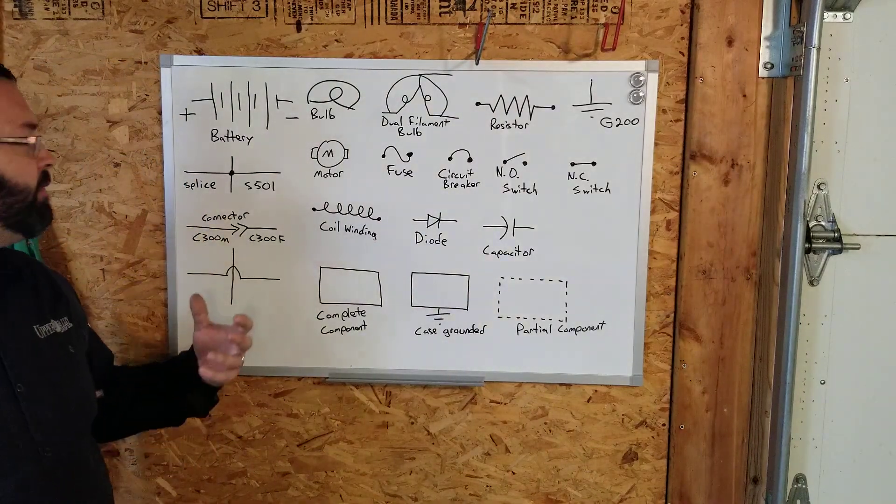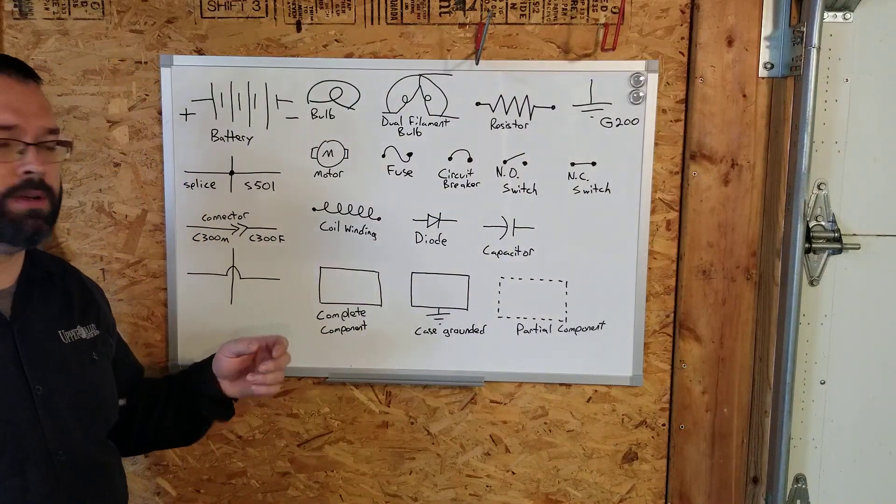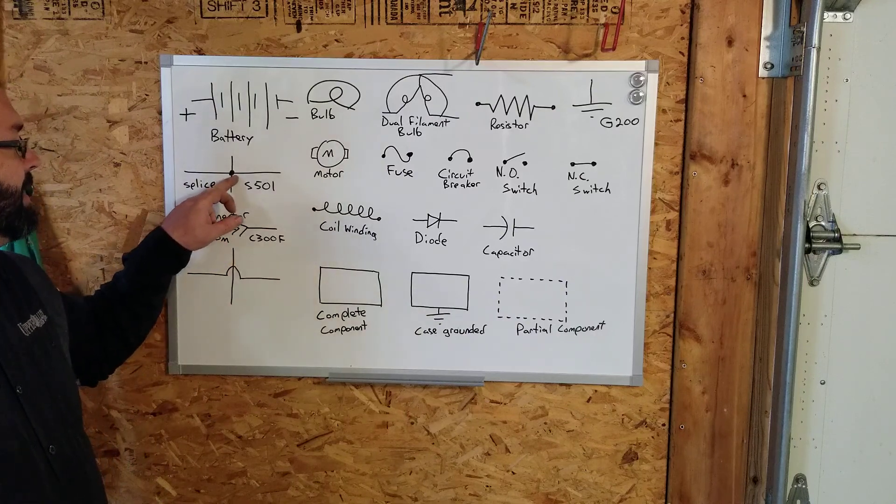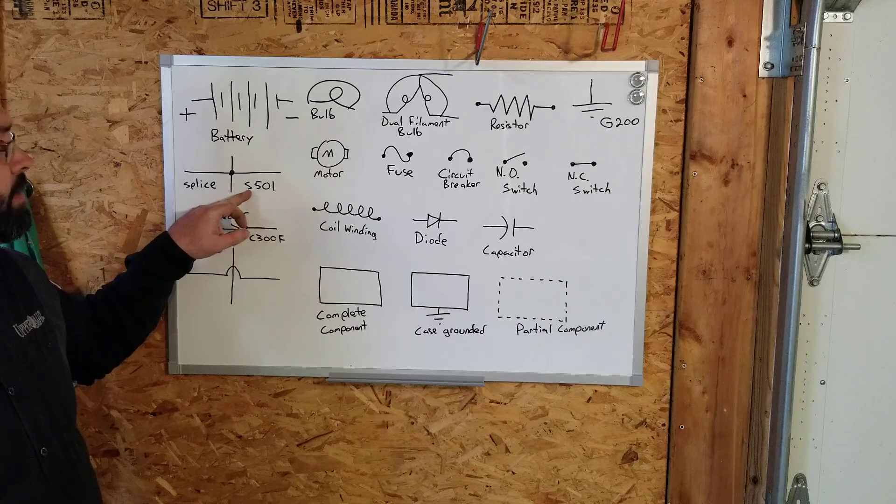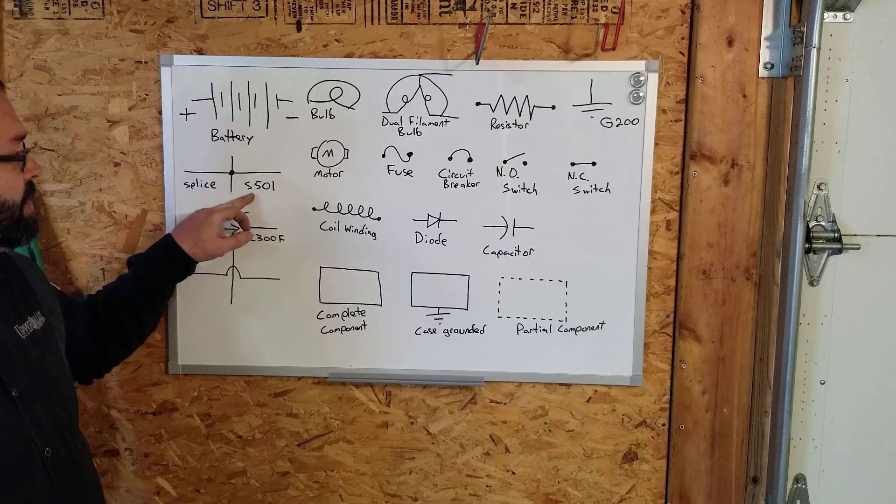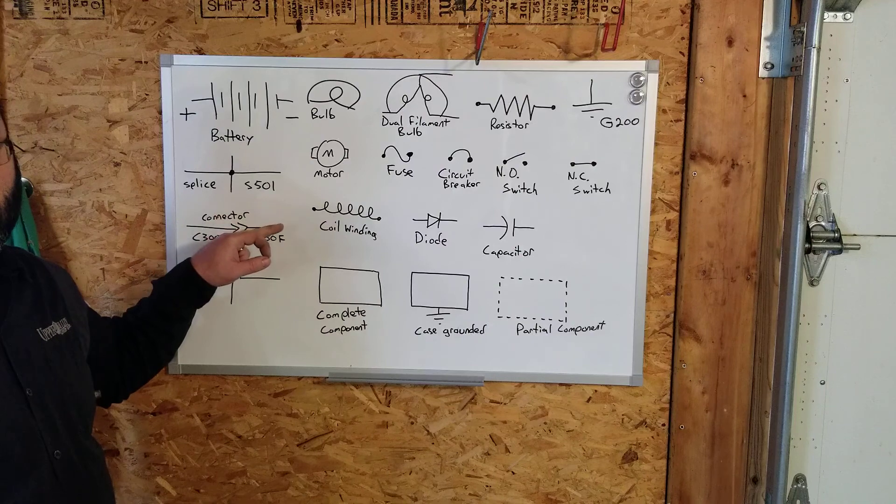We have splices. If they've attached two wires, we can have a splice. It's indicated by this little dot - it's a union where they've joined those together. If it's a location, we'll have S for splice, then a number like 501.